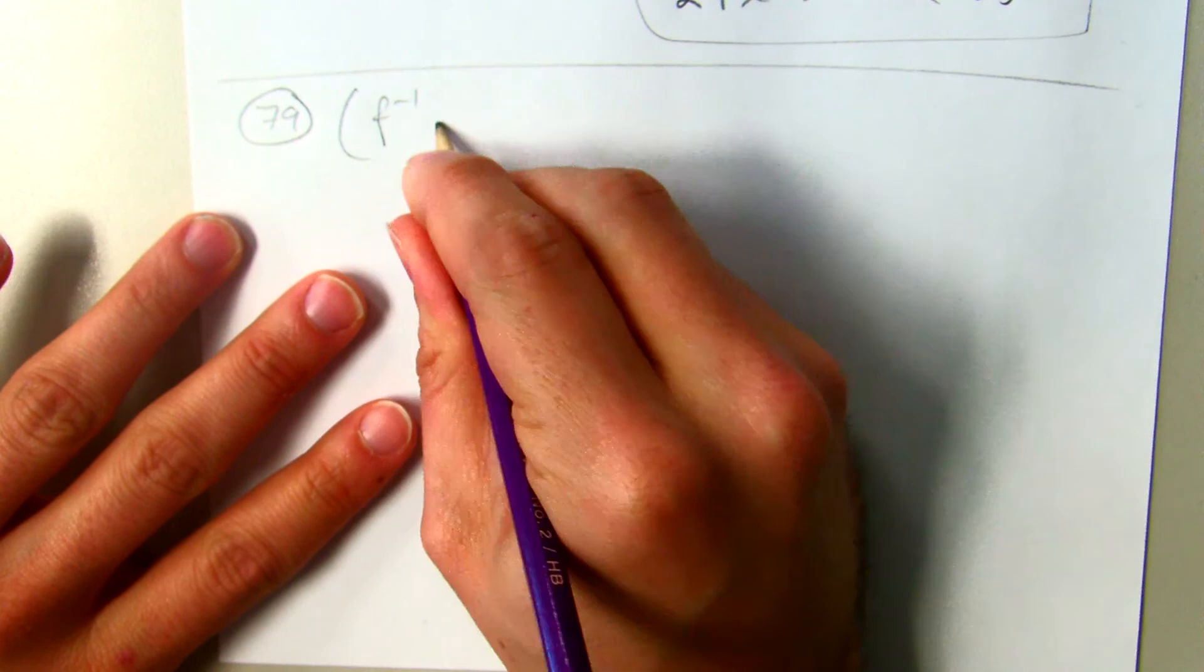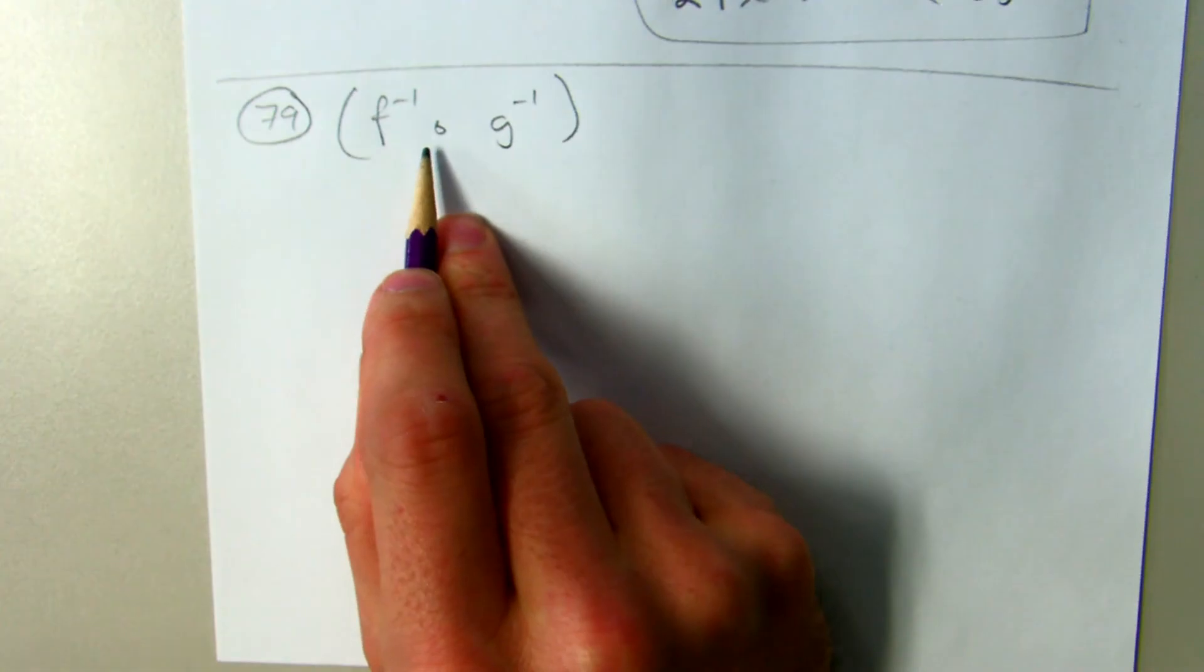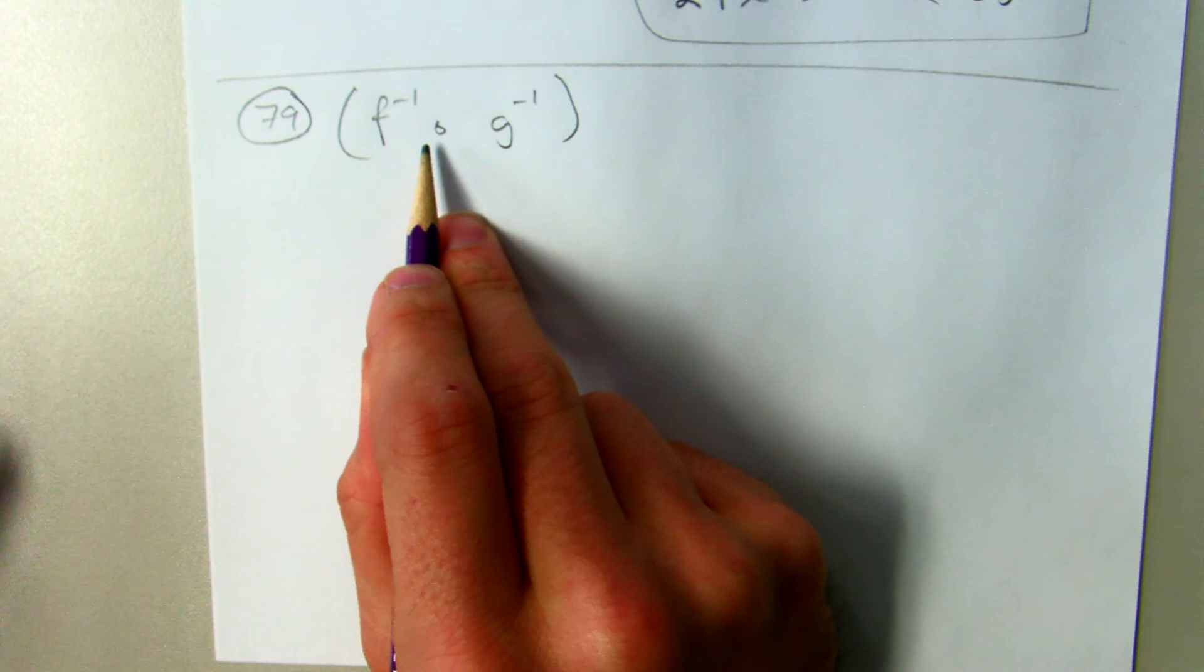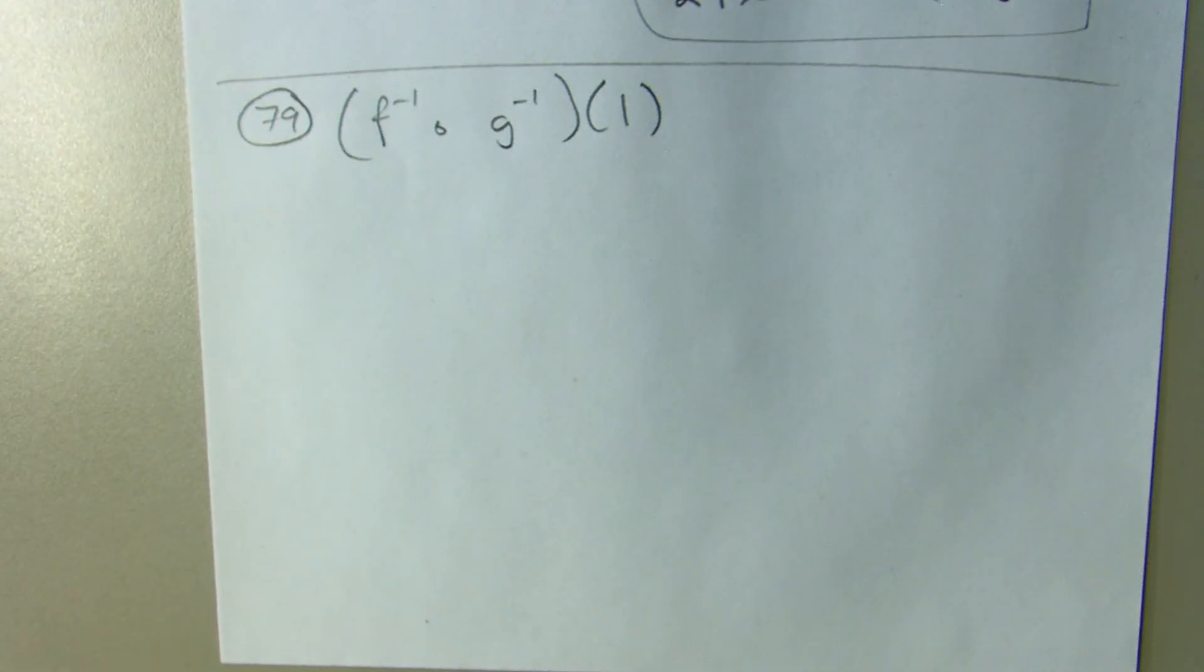Looks like we're going to find the inverse of F, the inverse of G, but we're going to do some composition, put some stuff into each other. That's not going to be in terms of X, we're actually going to put the one in at the end so we can just do a numerical answer.